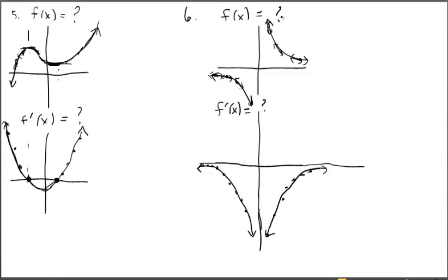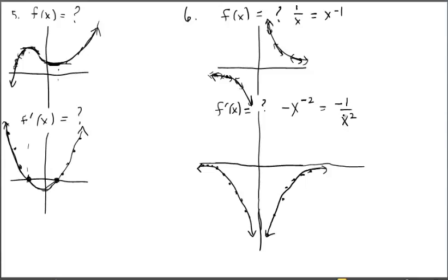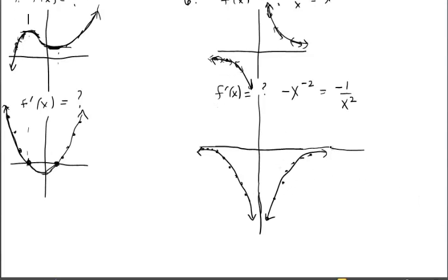If you wanted to check it because you think this is the reciprocal graph — one over x — rewrite it and think about applying the power rule. You're going to get negative one times x to the negative two, which could be rewritten as negative one over x squared. Thinking about our previous work with one over x squared: positive one over x squared comes together near the positive y-axis, so negative one over x squared would just be a reflection of that. So everything seems to be in order graphically and numerically.